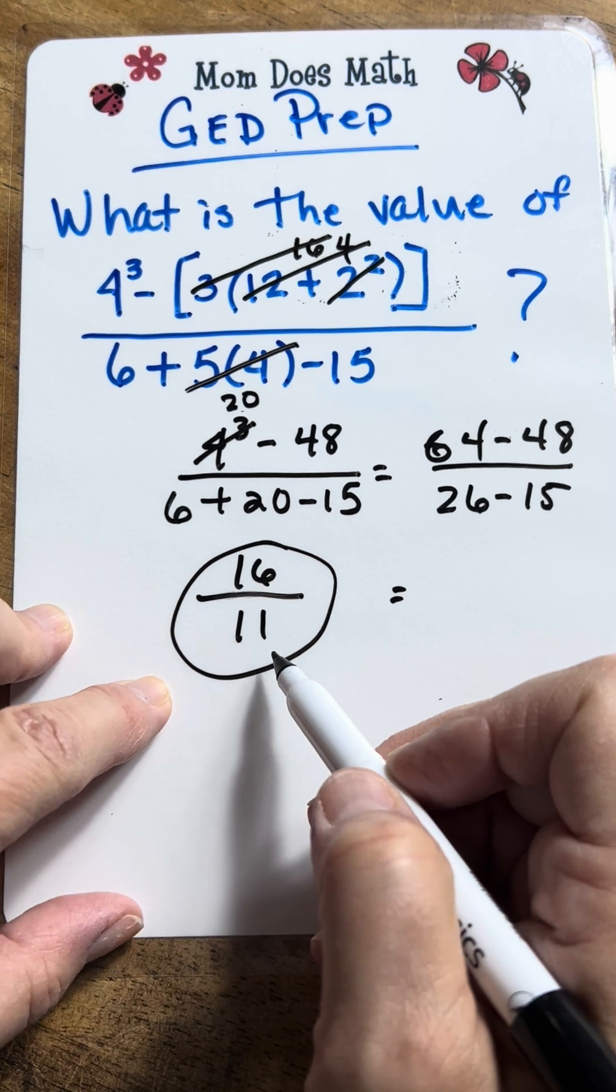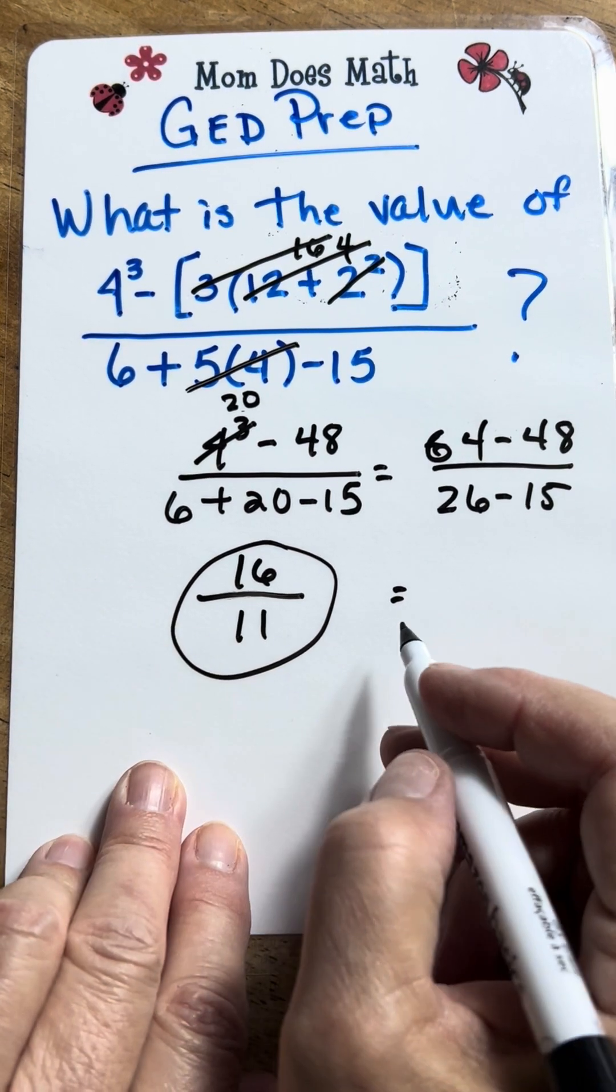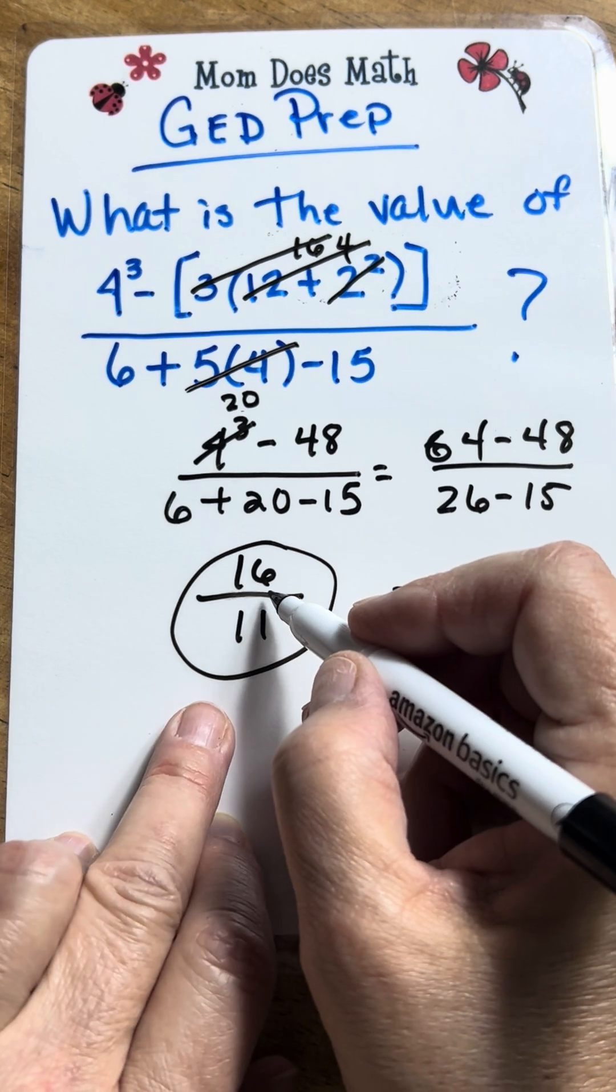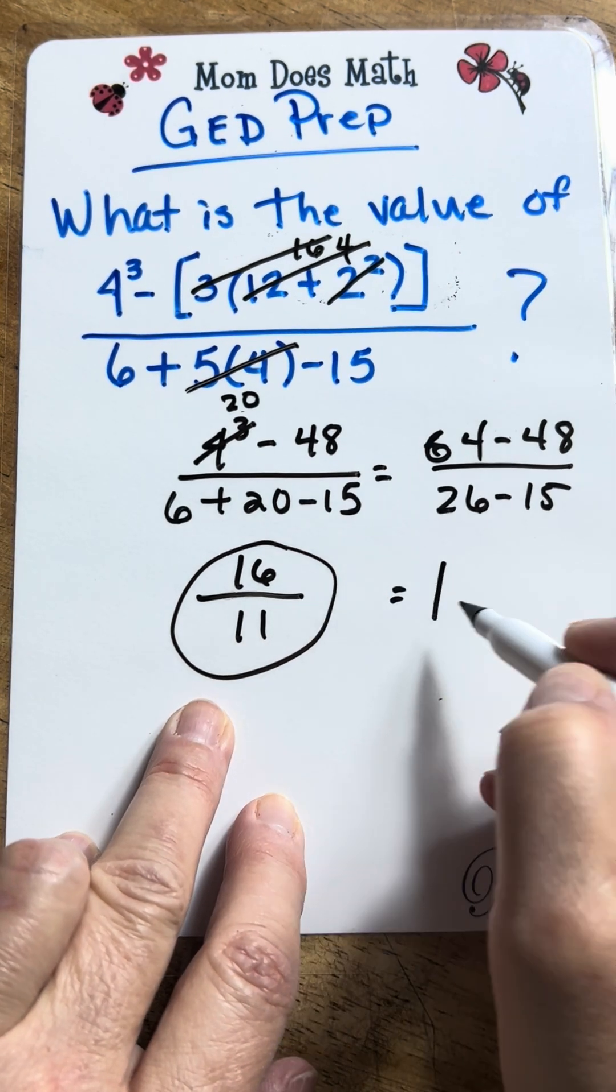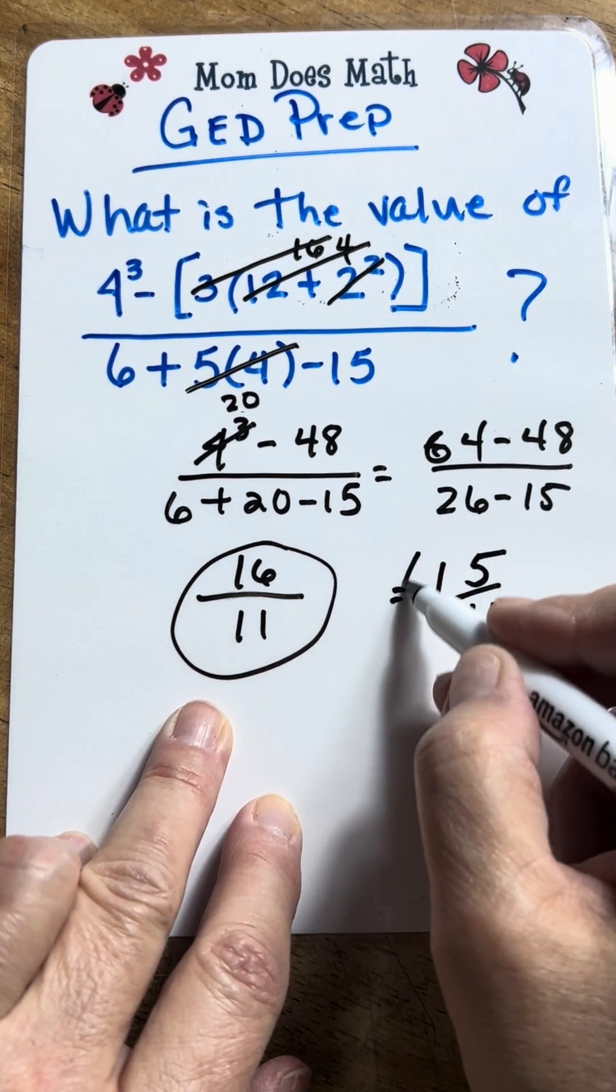Now, this is improper, but it is simplest form. However, if they ask you to put your answers in mixed numbers, well, how many times will 11 go into 16? One time with 5 left over and you keep your same denominator.